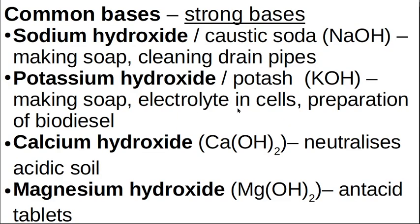What bases do we know? Sodium hydroxide is usually in drain cleaner. If you pour it down a blocked drain it gets hot, makes gas, and makes terrible noises. The drain cleaner bottle might say it contains caustic soda — that is the common name for sodium hydroxide. We also use sodium hydroxide to make soap, where it bonds with fat.